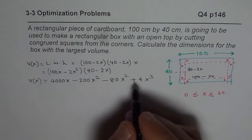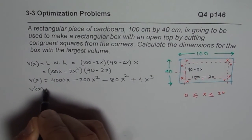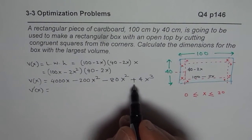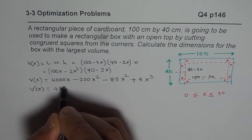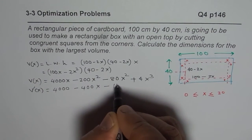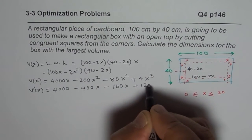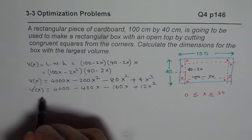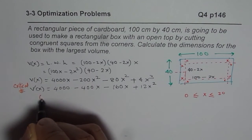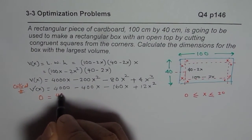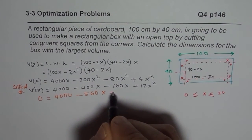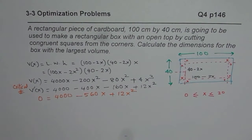Now to maximize the volume, we need to find the critical number. So let us find its derivative and equate it to 0. The derivative is 4000 minus 400x minus 160x plus 12x squared. Combining terms, we set 0 equal to 4000 minus 560x plus 12x squared. That is the quadratic equation which we get.